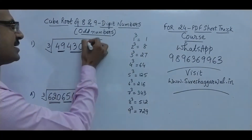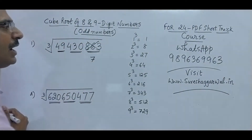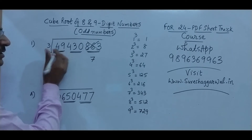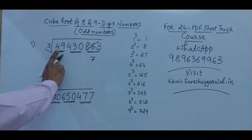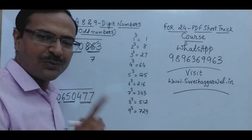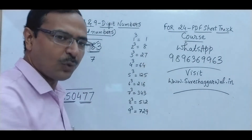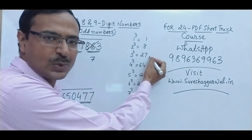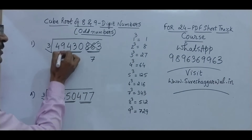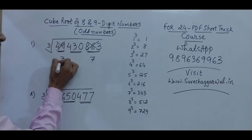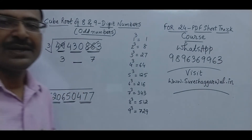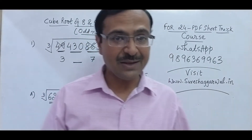Now, before finding the middle term, I come to the first digit. The leftmost group is 49. Between which two perfect cubes does 49 lie? It lies between 27 and 64 — the smaller one is 27, which is 3 cubed. So 3 becomes the first digit. My answer has to be 3-something-7.